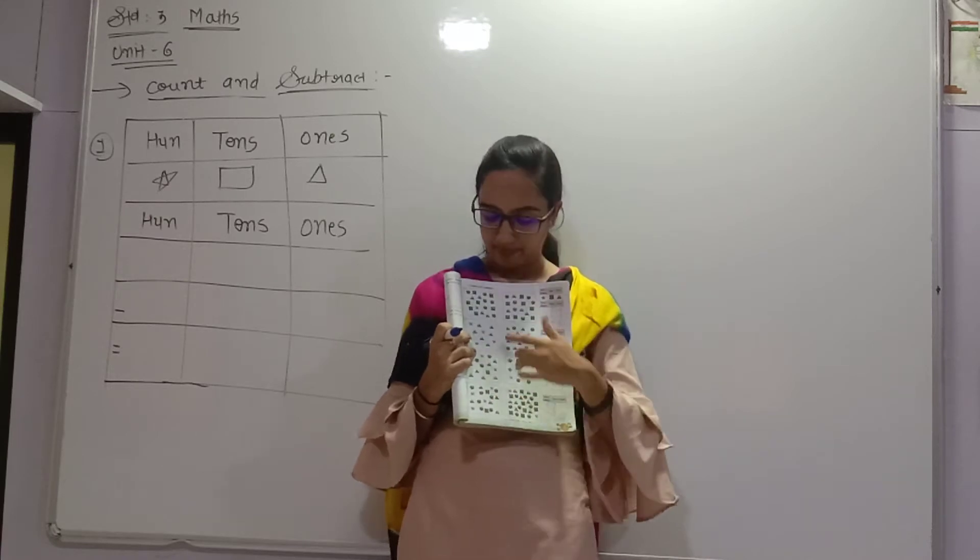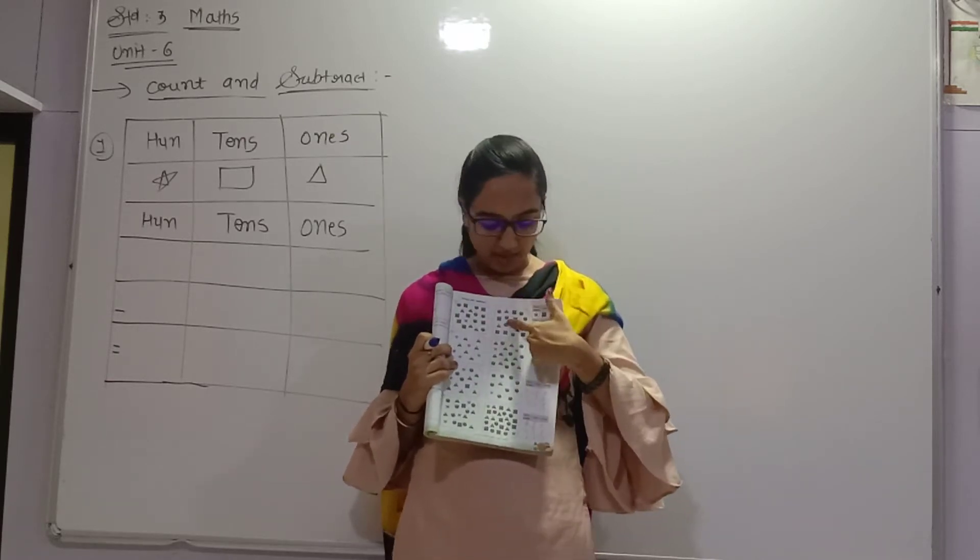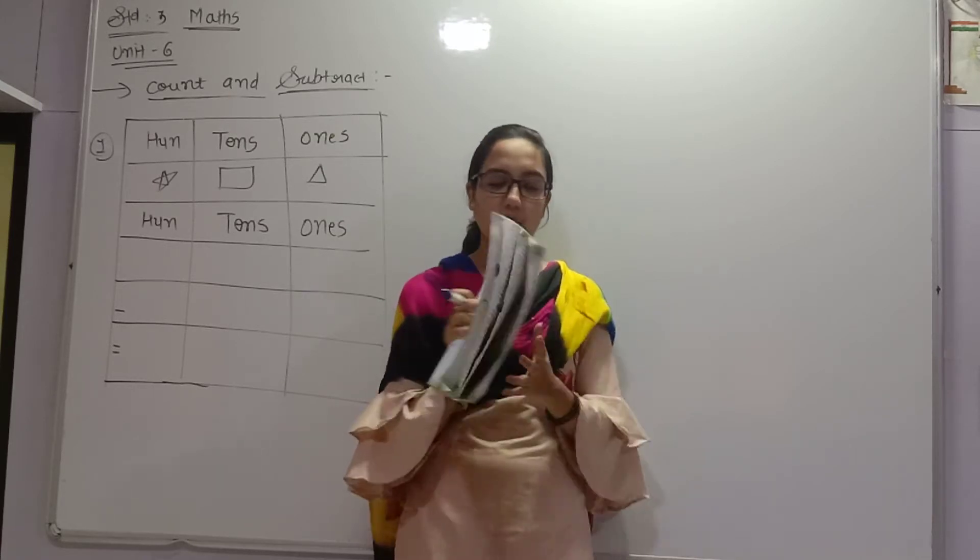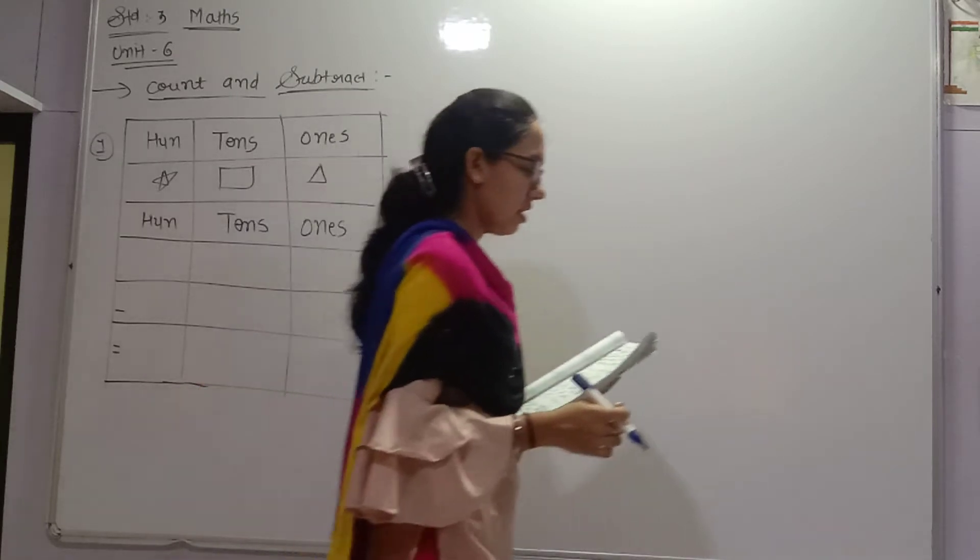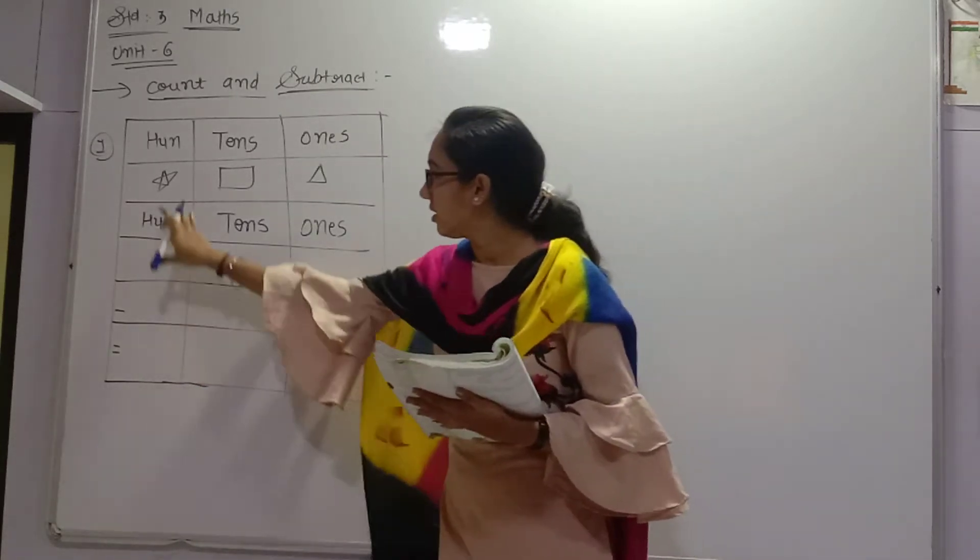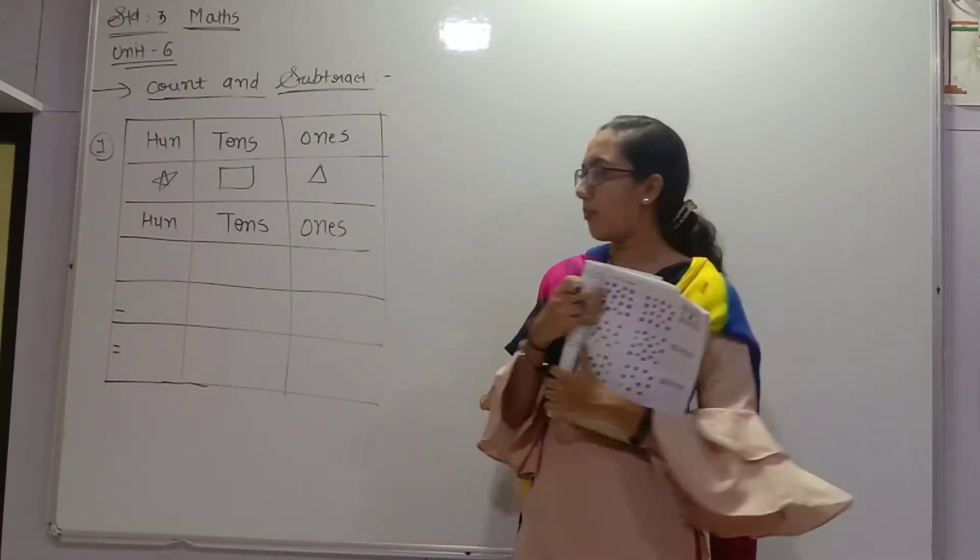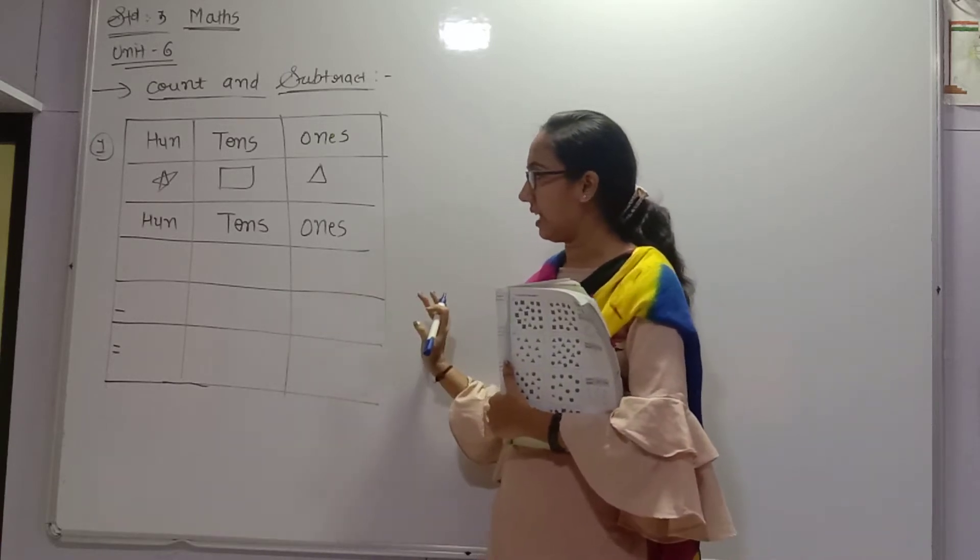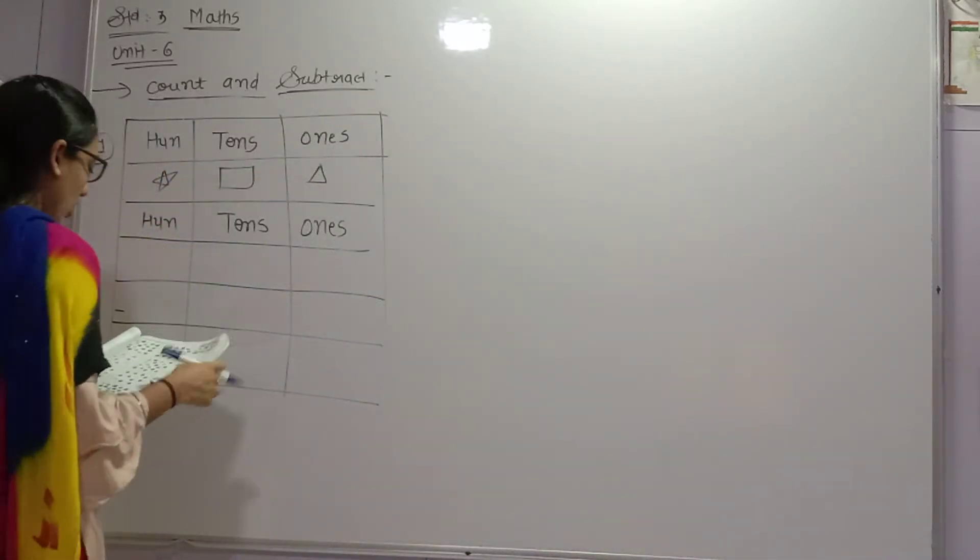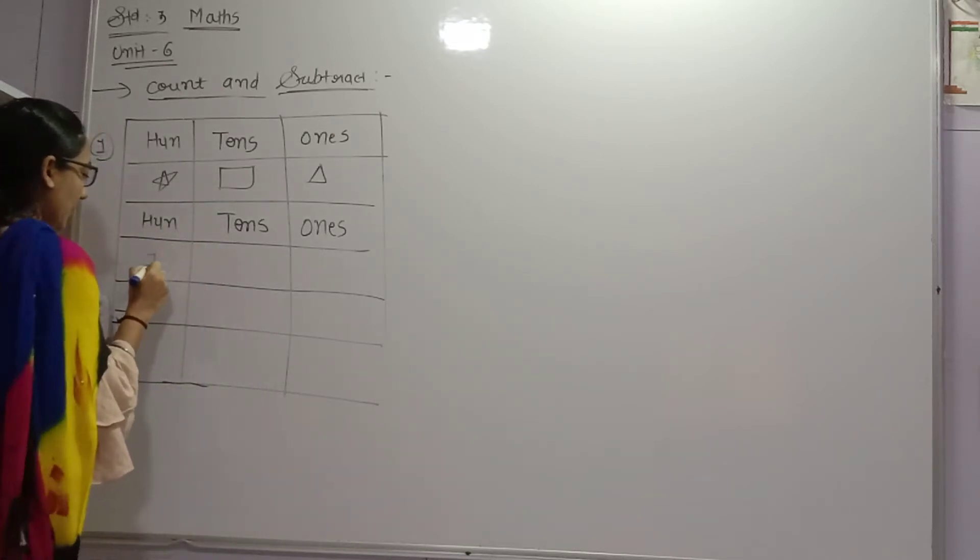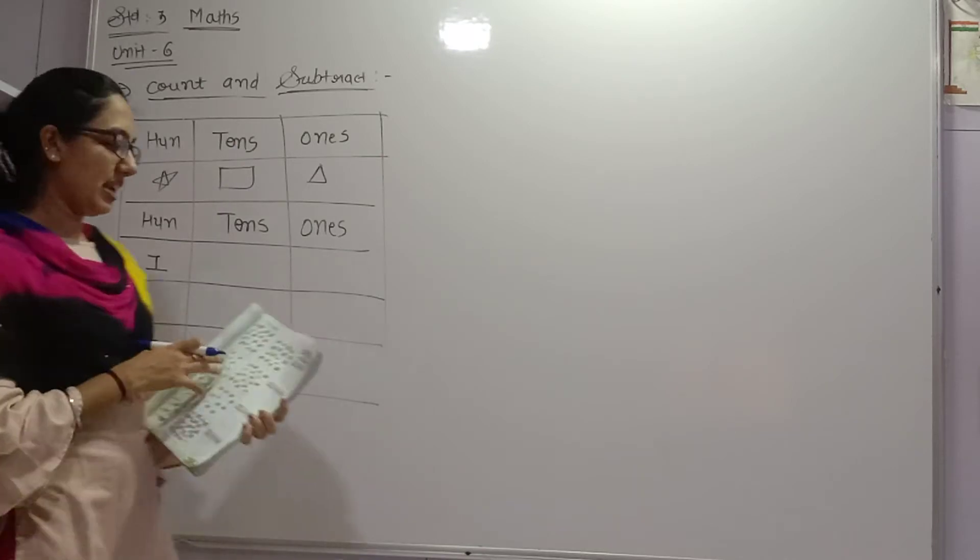Both sides, the first box and the second box, but what is the main condition? You have given here hundreds, tens, and ones. You have given here hundreds, so hundreds means start and count only here.